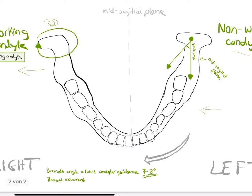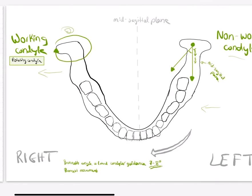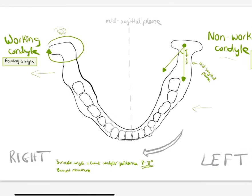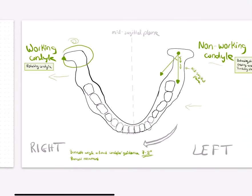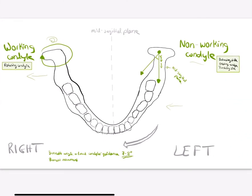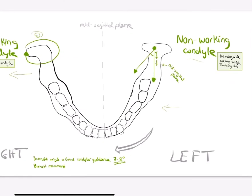We have two shifts: the initial side shift and the progressive side shift. The initial side shift is where the condyle of the non-working side moves 1.7 millimeters medially within the space between the condyle and the medial wall of the fossa.